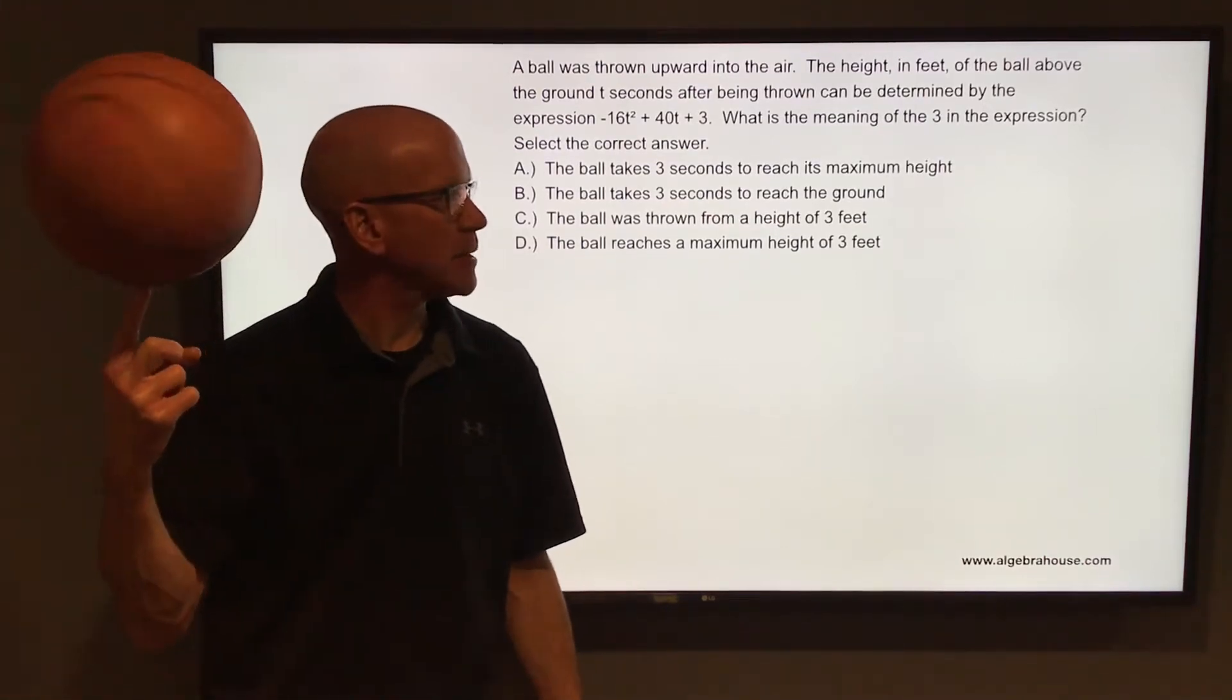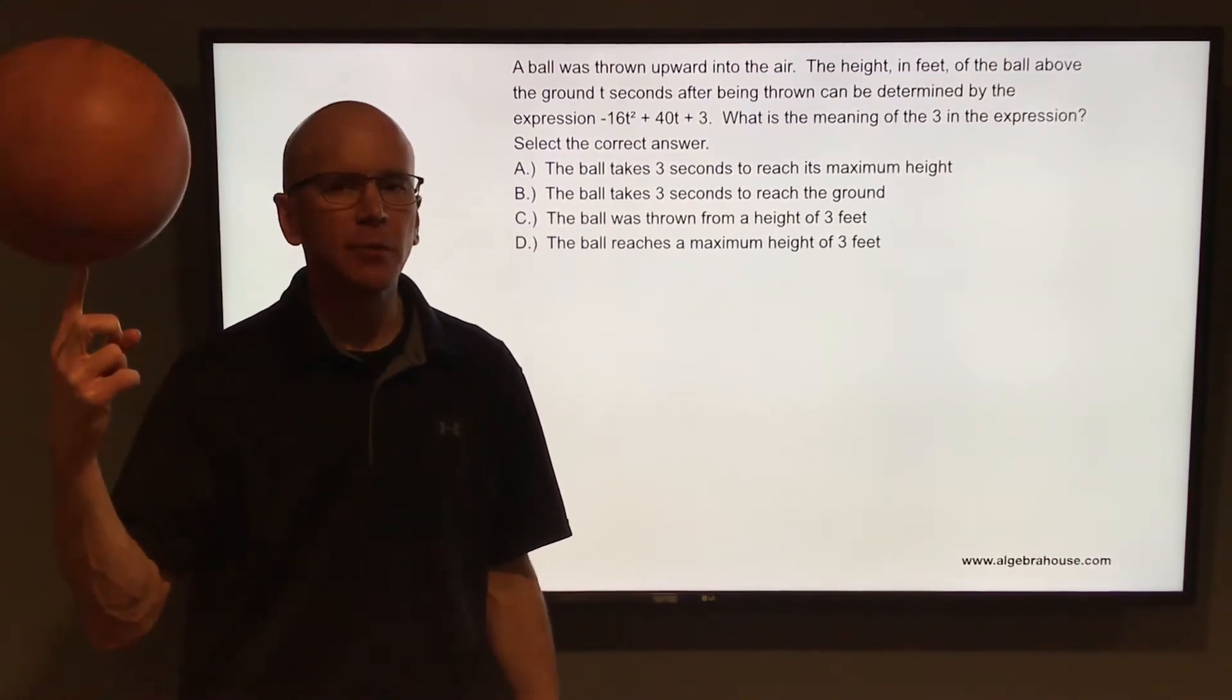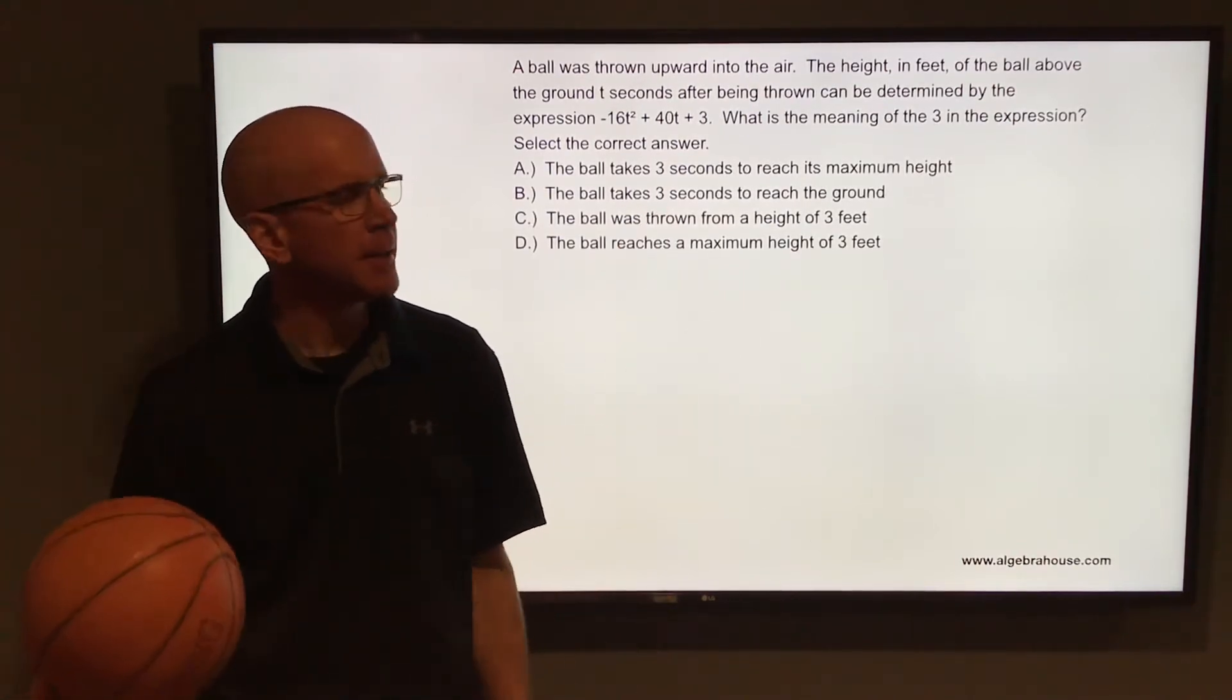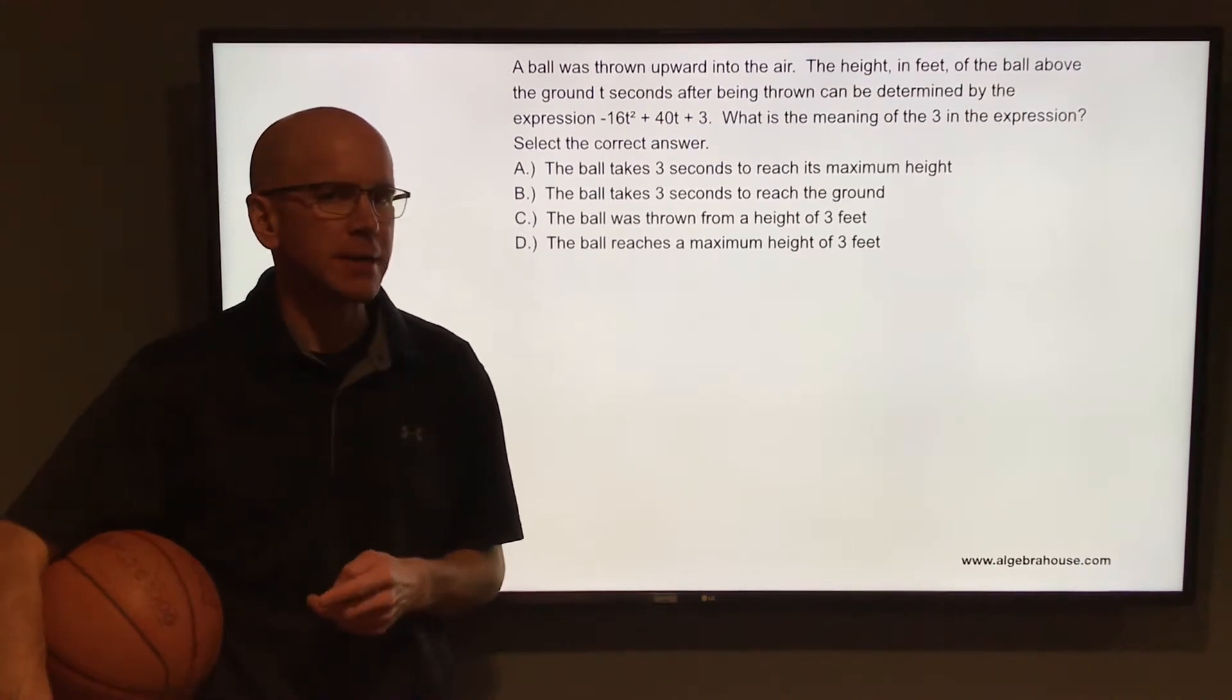A ball is thrown upward into the air. The height in feet of the ball above the ground t seconds after being thrown can be determined by the expression negative 16t squared plus 40t plus 3. What is the meaning of the 3 in the expression? Select the correct answer.